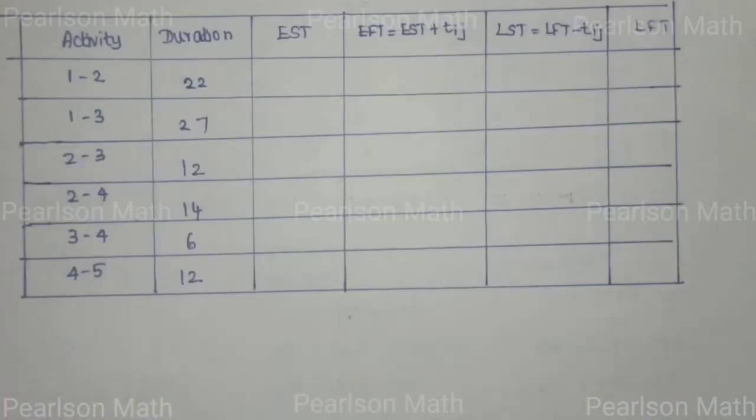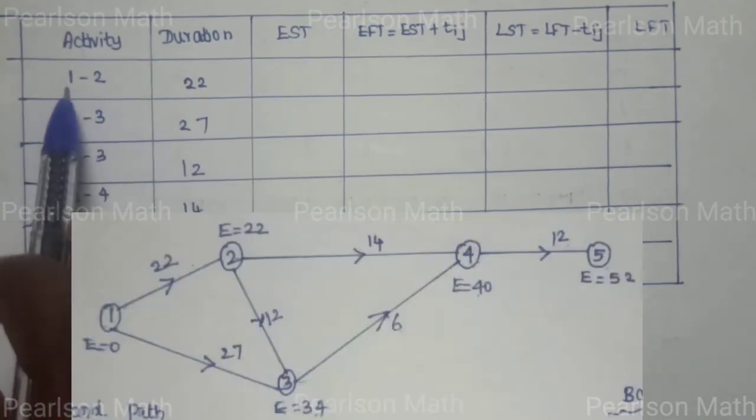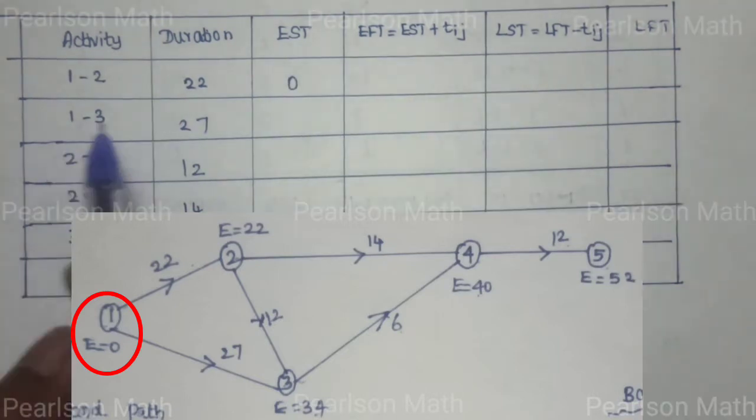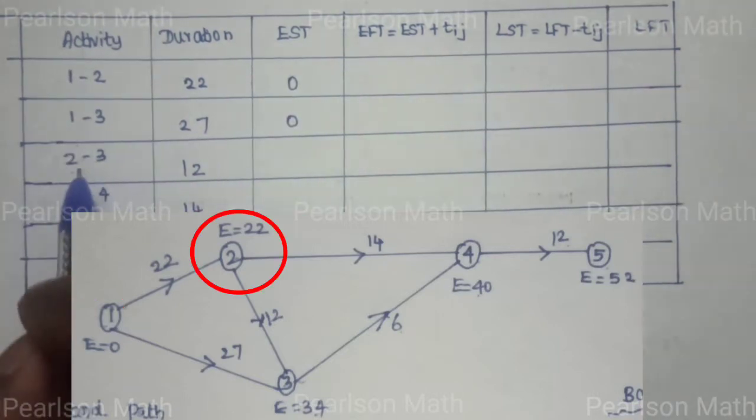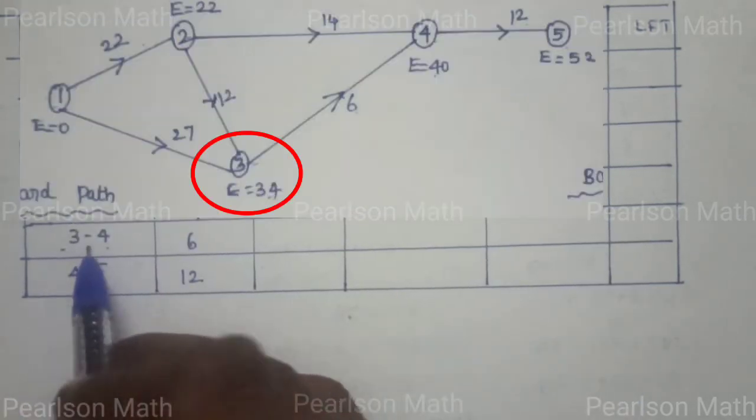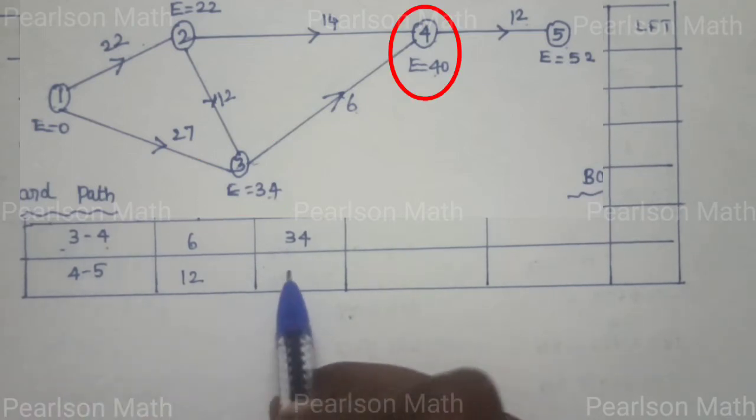Now we create the table. EST, early start time: 1 to 2 starting point, this value is 0. For 2 to 3, the value is 22. For 3 to 4, this value is 34. For 4 to 5, this value is 40.